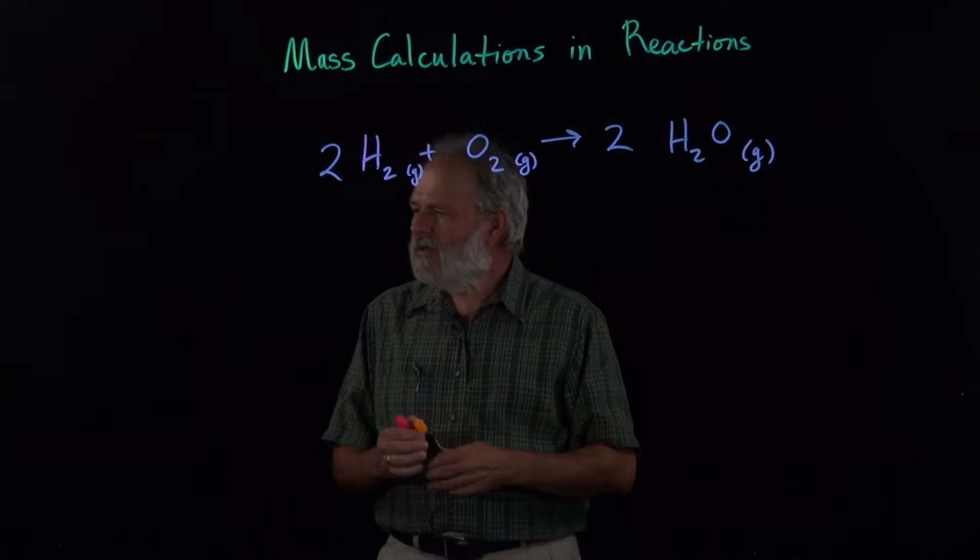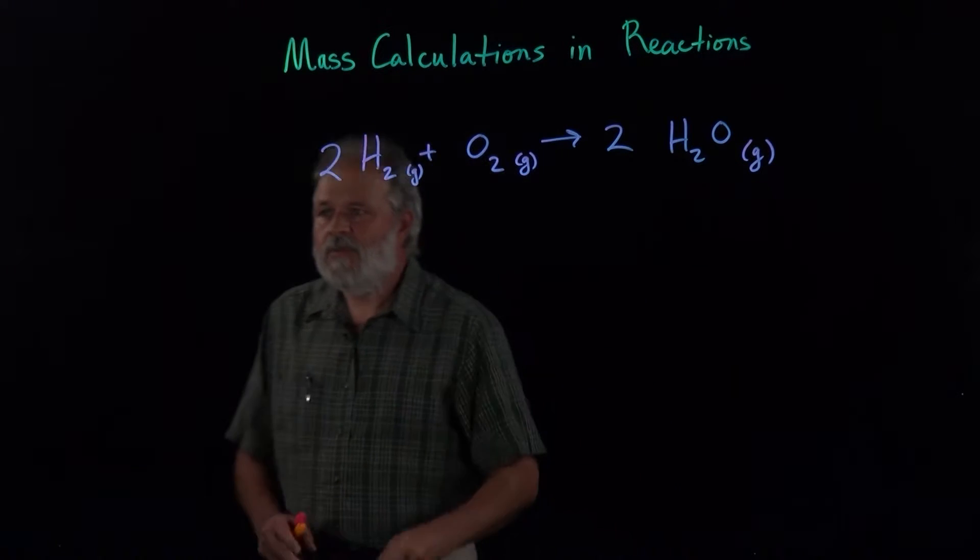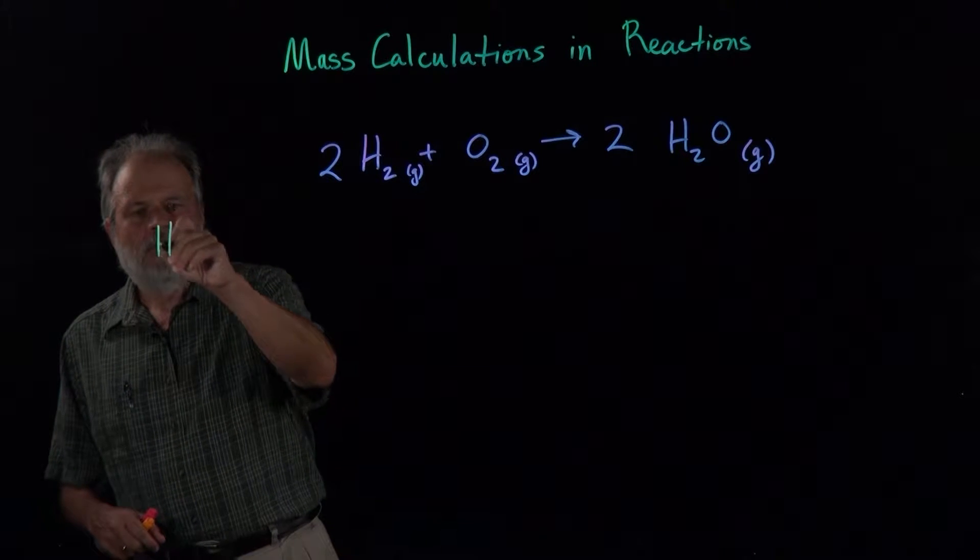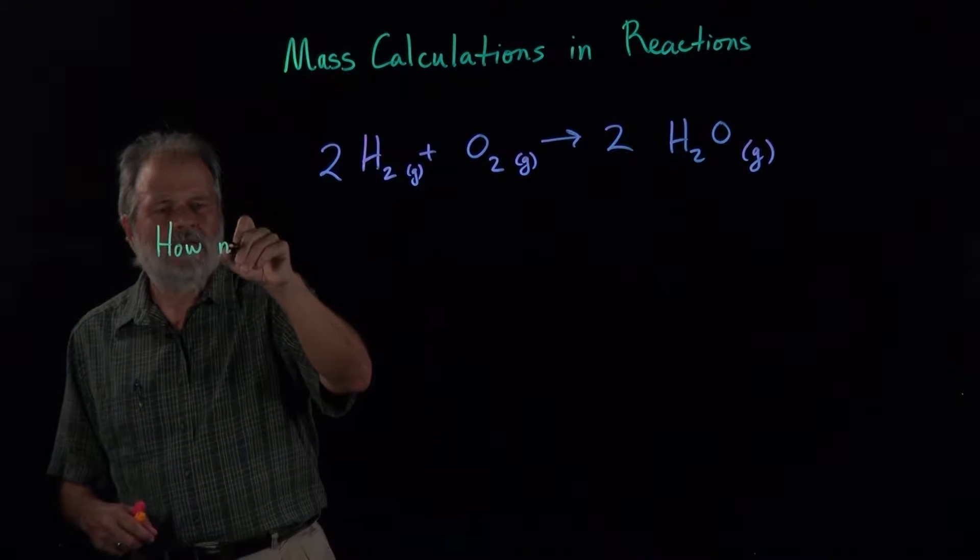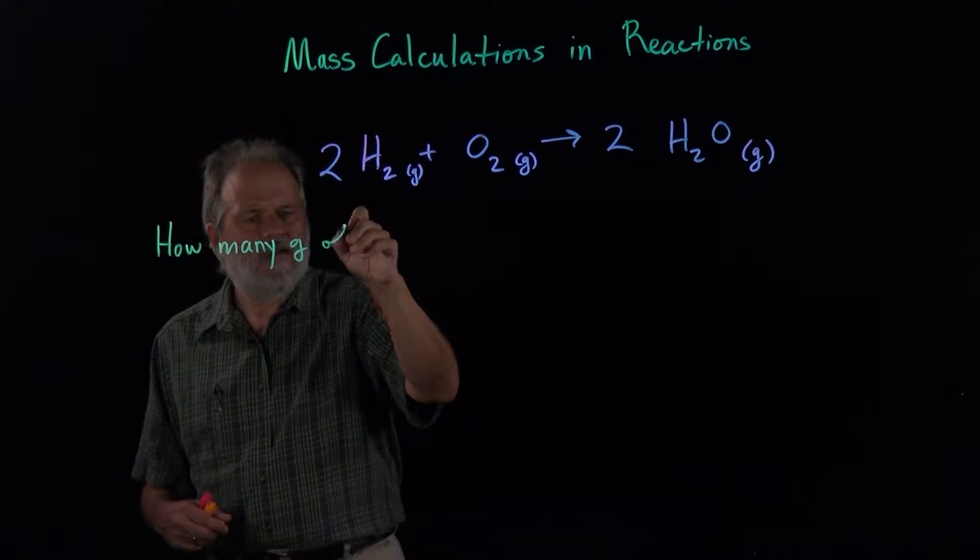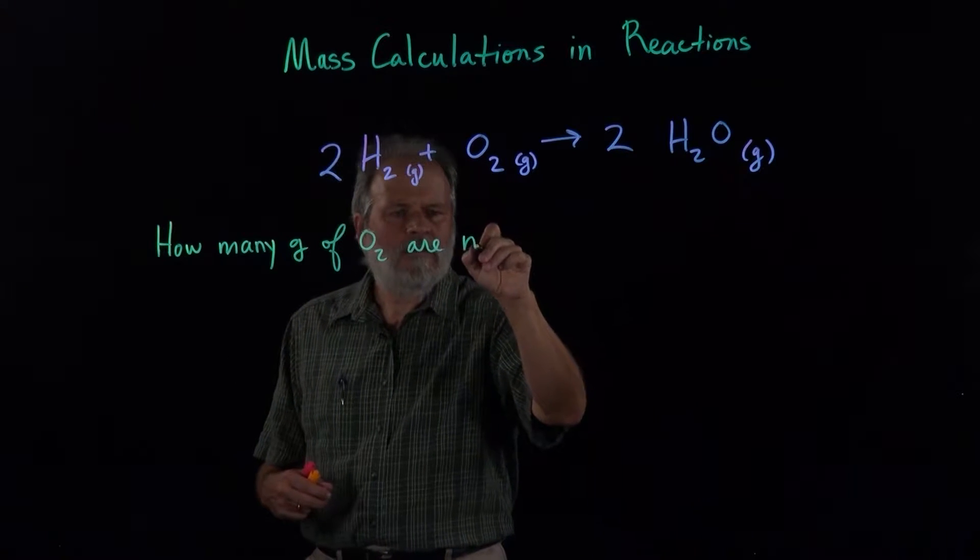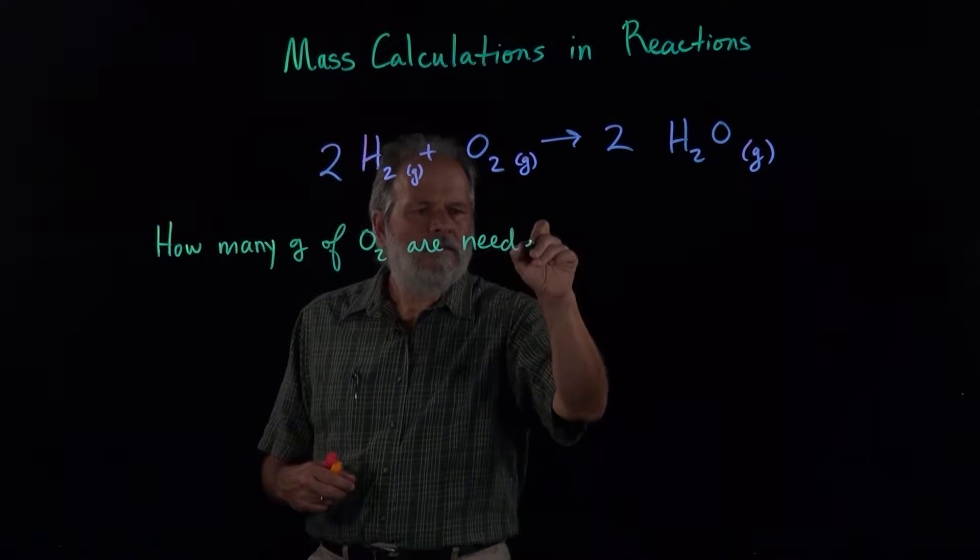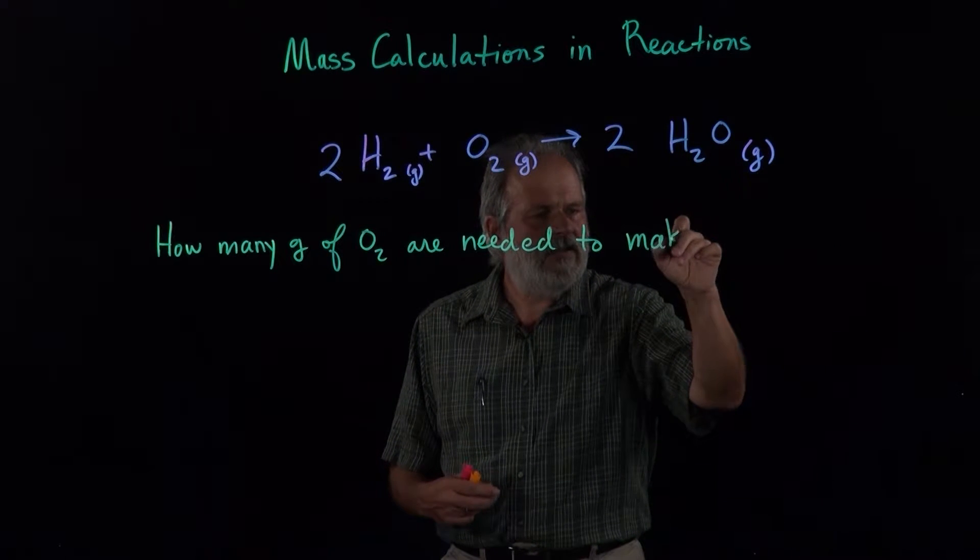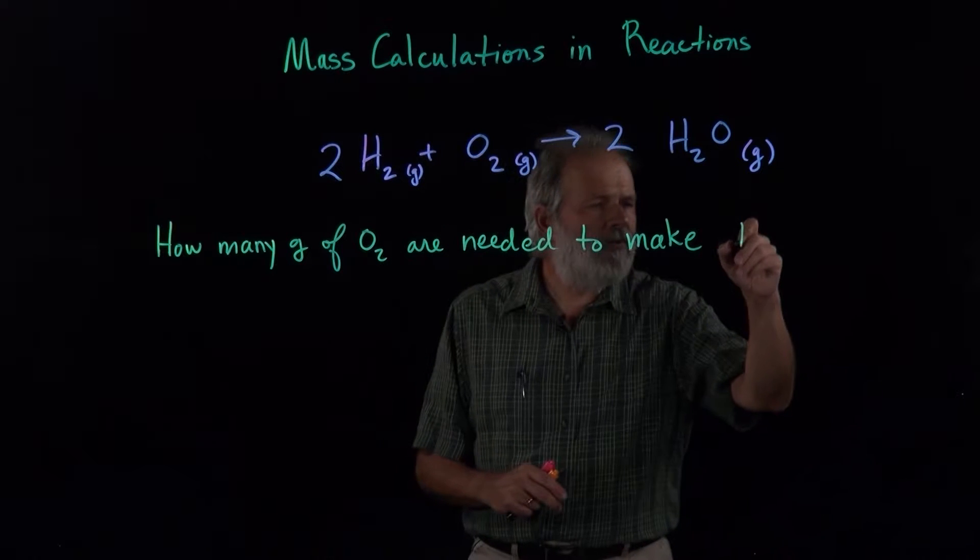So for example, the problem we're going to look at is going to be how many grams of oxygen are needed to make a certain gram quantity of something else, and that will be 13.1 grams of water.